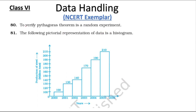Statement 80: Verify Pythagoras theorem is a random experiment — this is not a random experiment because the result of Pythagoras theorem is predetermined. So this is not a random experiment.